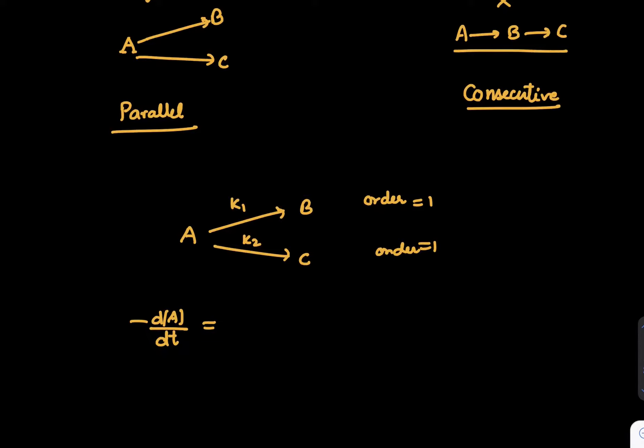So minus dA by dt is rate of disappearance of A. Net rate of disappearance of A is rate of disappearance in reaction number 1 and rate of disappearance in reaction number 2. So we can write, it is nothing but minus dA by dt for the reaction number 1 plus minus dA over dt for the reaction number 2.